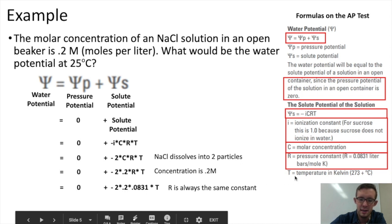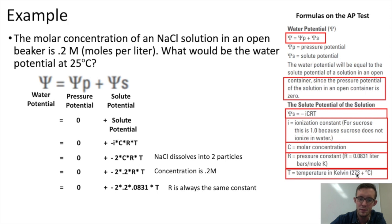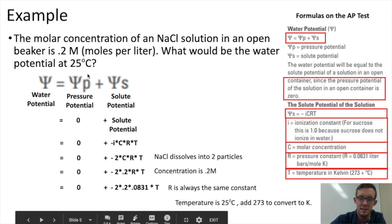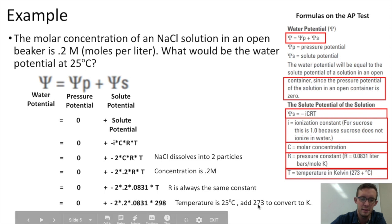And then last, T would stand for the temperature in Kelvin. So in this case, because our temperature was 25 degrees Celsius, we can add 273 to it. Our temperature in Kelvin would be 298. At this point, we have all of the information that we would need to calculate the solute potential and then in turn calculate the water potential. If we were to crunch all of these numbers into our calculator, we would find that the water potential would end up being equal to negative 9.9.